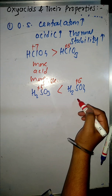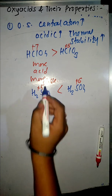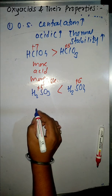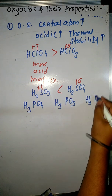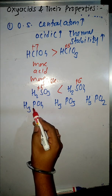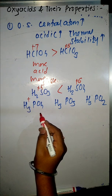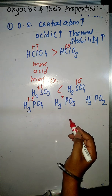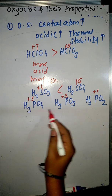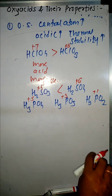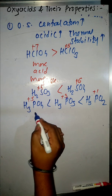Similarly, H2SO4 is more acidic and thermally more stable compared to H2SO3. However, there is an exception to this rule for phosphorus acids: H3PO4, H3PO3, and H3PO2. The oxidation states of phosphorus are +5, +3, and +1 respectively, so normally H3PO4 should be most acidic. But here the order is opposite — H3PO2 is more acidic than H3PO3, which is more acidic than H3PO4. This is the exception to the general rule.